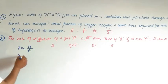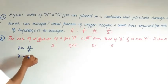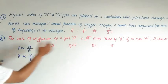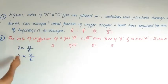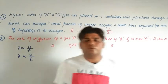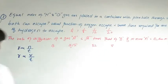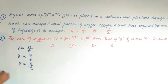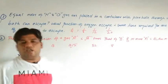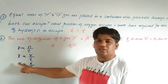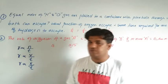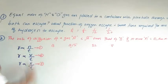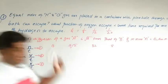Graham's Law can also be written as rate ∝ v/t (volume per unit time) or rate ∝ x/t, where x is the distance traveled by a molecule per unit time. If a molecule travels a greater distance per unit time, its rate of diffusion is higher. These are all valid mathematical forms of Graham's Law of Diffusion or Effusion.